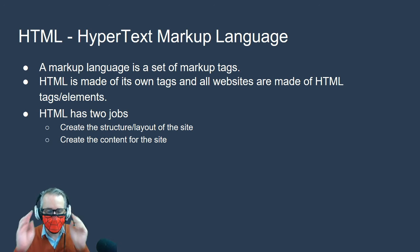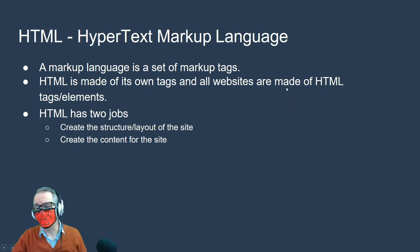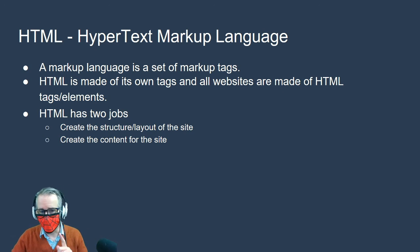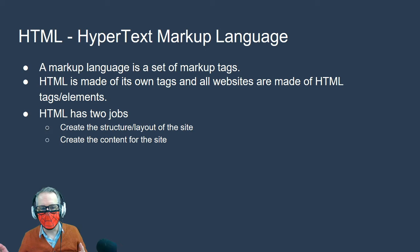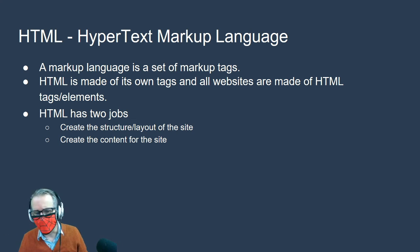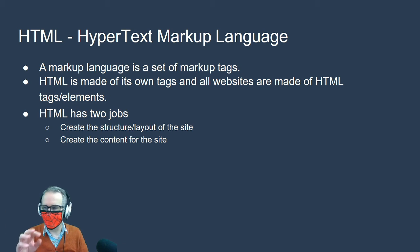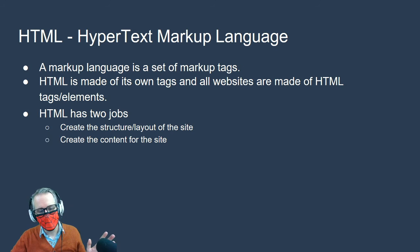There are different versions of HTML and the most recent is HTML5, which is what we're going to use. HTML has two jobs: first, to create the structure and layout of the website — like where your nav bar is, where your images are — and second, to provide the content for your site: the actual words, images, and videos you want on your website.